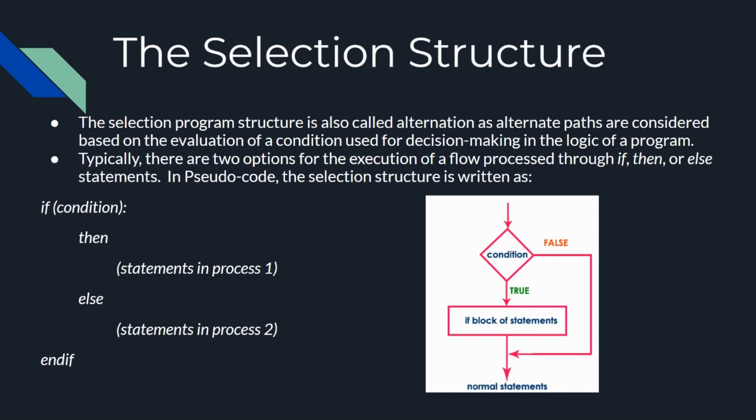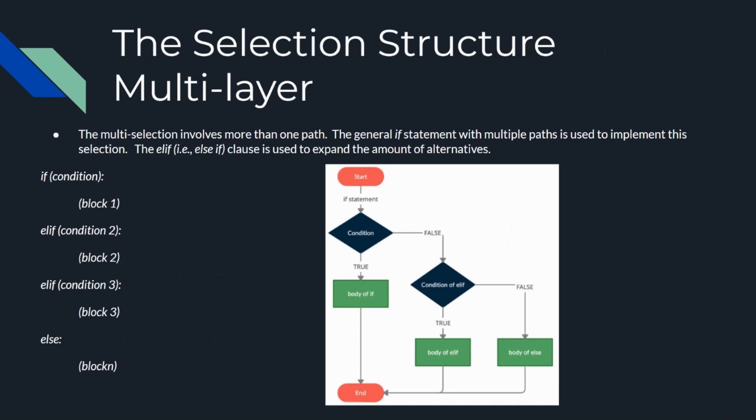With the Python language, the selection structure is written with an if statement and includes three sections: the condition, the then section, and the else section. The else section is optional. The keywords used in this statement are if and else. When the condition is evaluated, only one of the two alternatives will be carried out — the one with the statements in process 1 if the condition is true, or the one with the statements in process 2 if the condition is false.